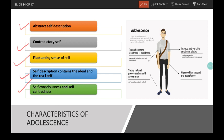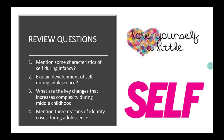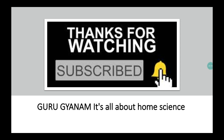It is very important to develop a strong sense of personal identity during adolescent age. This will help adolescents develop the ability to form lasting, meaningful relationships with other people. People with a poor sense of self may have less committed relationships and are more likely to suffer emotional isolation, loneliness and depression. This concludes development and characteristics of the self. Review questions: 1. Mention some characteristics of self during infancy. 2. Explain development of self during adolescence. 3. What are the key changes that increase complexity during middle childhood? 4. Mention three reasons for identity crisis during adolescent age. Thanks for watching — don't forget to subscribe!